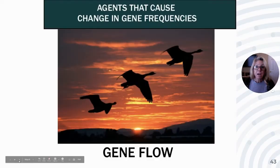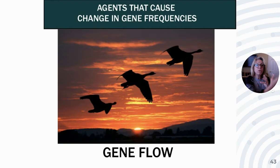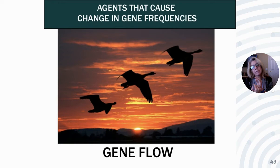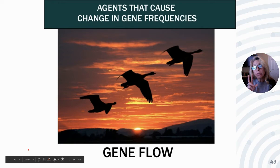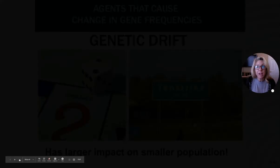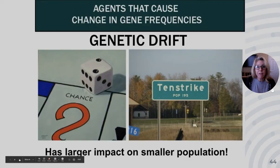Another condition is no gene flow — no migration out of or into a population. Gene flow is the movement of alleles between populations. You would have to make populations reproductively isolated so there was no gene flow. If gene flow occurs, allele frequencies will change and evolution is occurring. Hardy-Weinberg sets you up to fail — there's no way to meet these five conditions, so there's no way to prevent evolution.